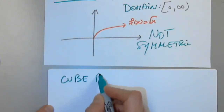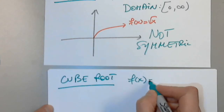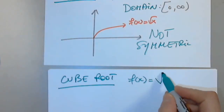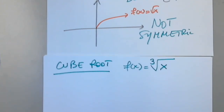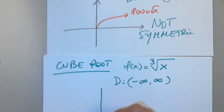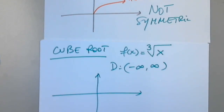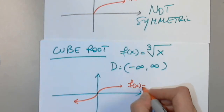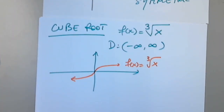Cube root: the simplest possible cube root function is f of x equals cube root of x. What is the domain? Can I apply the cube root to negative 8? To zero? To 27? Yes to all — so the domain is all real numbers. The cube root is friendly. Its graph reminds us a little of the square root. Is it odd, even, or none of the above? It is odd — symmetric with respect to the origin.